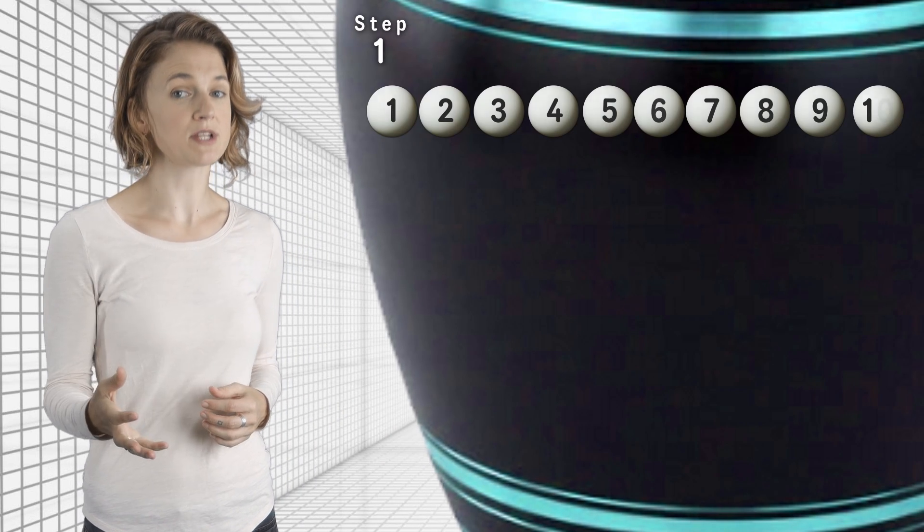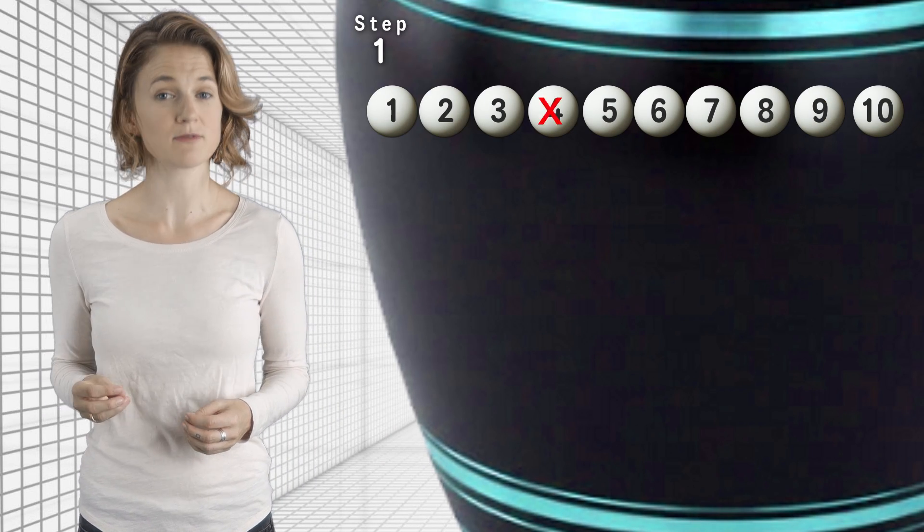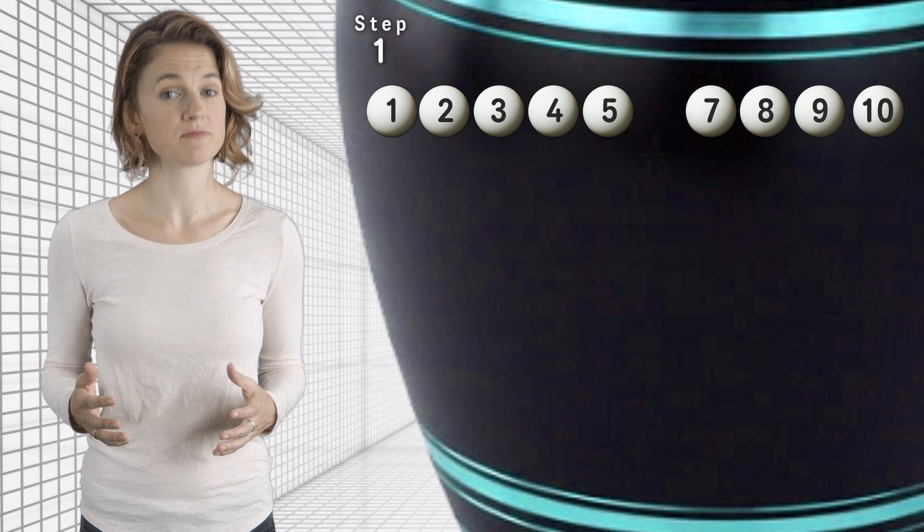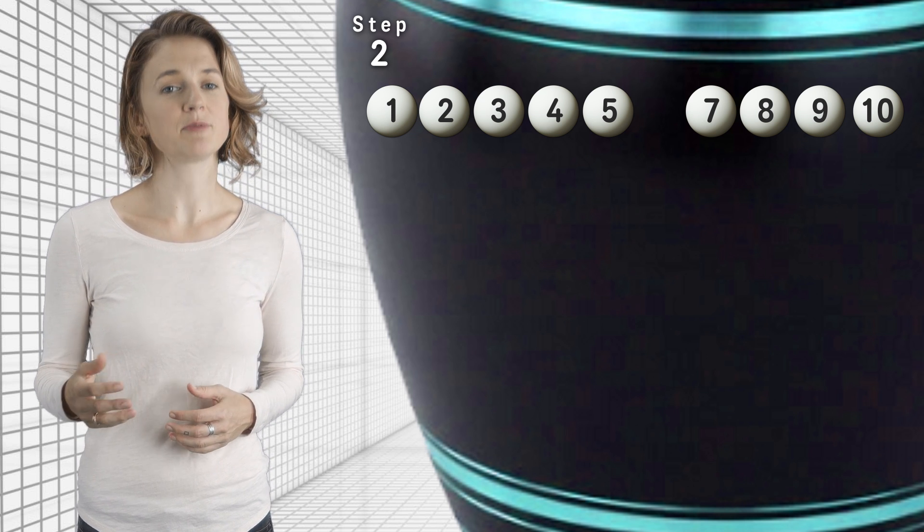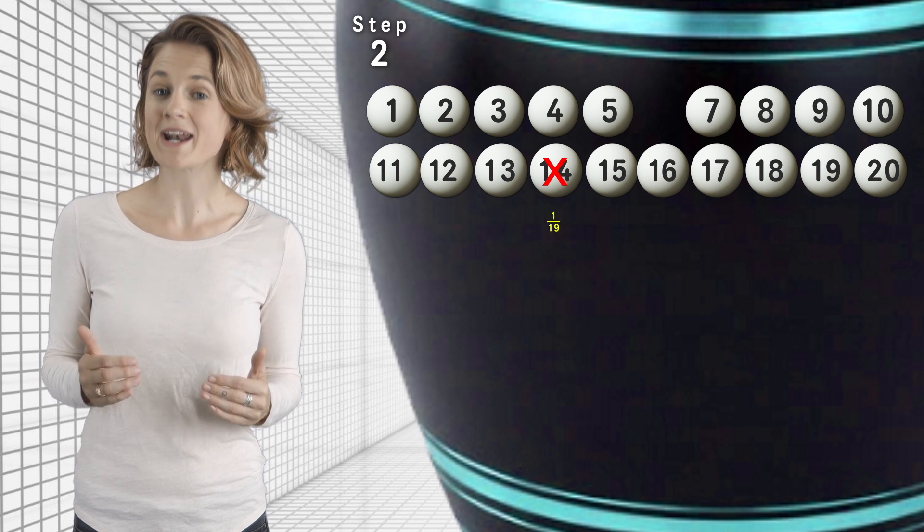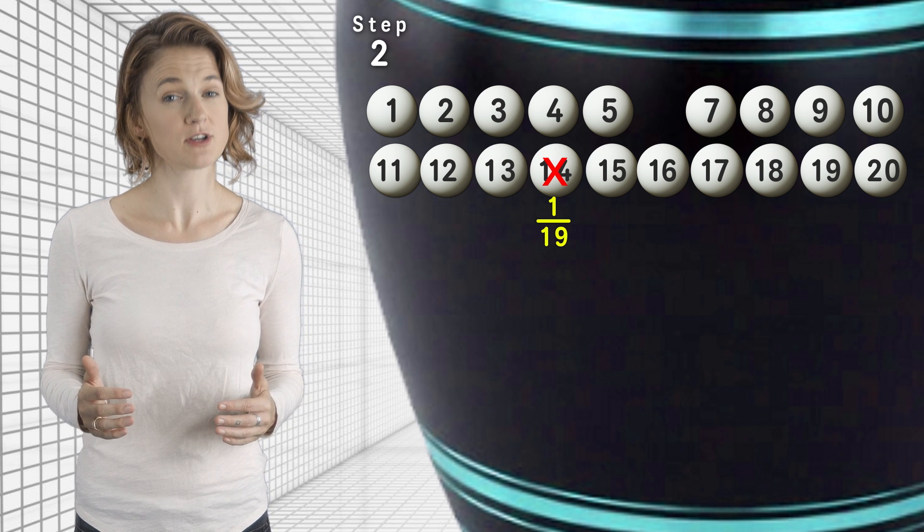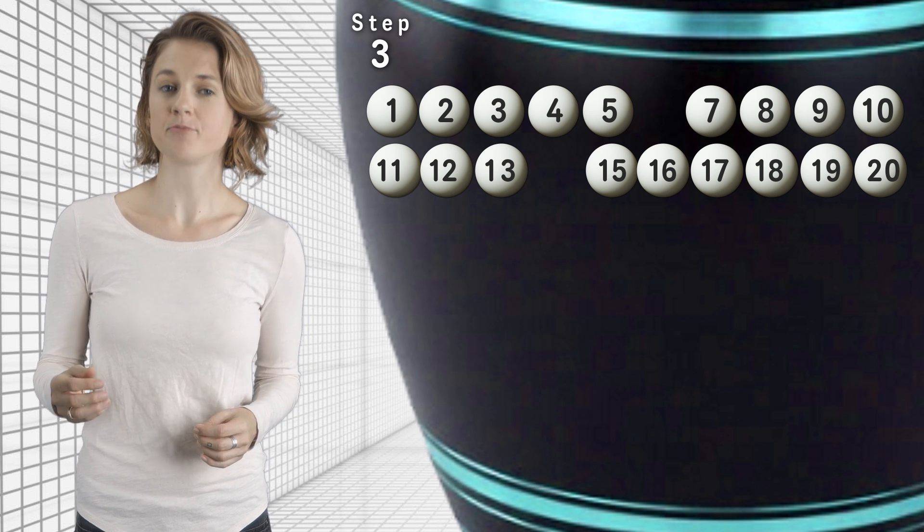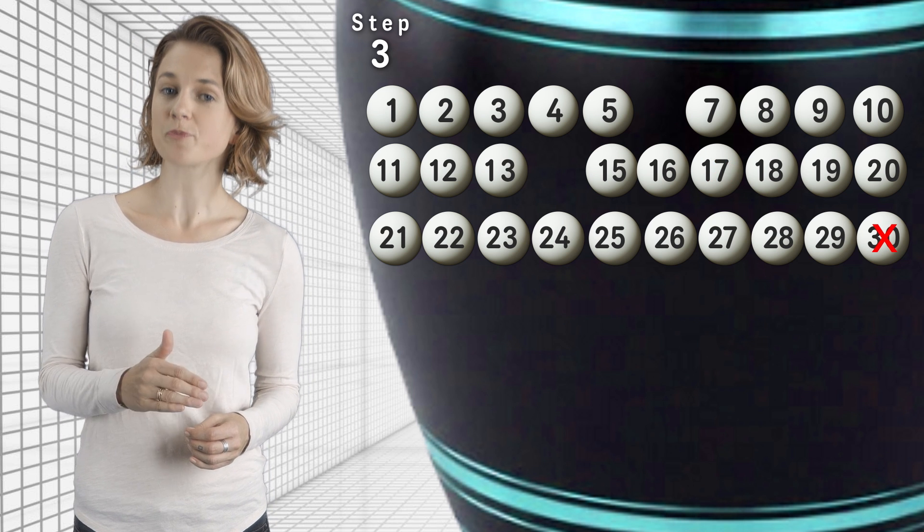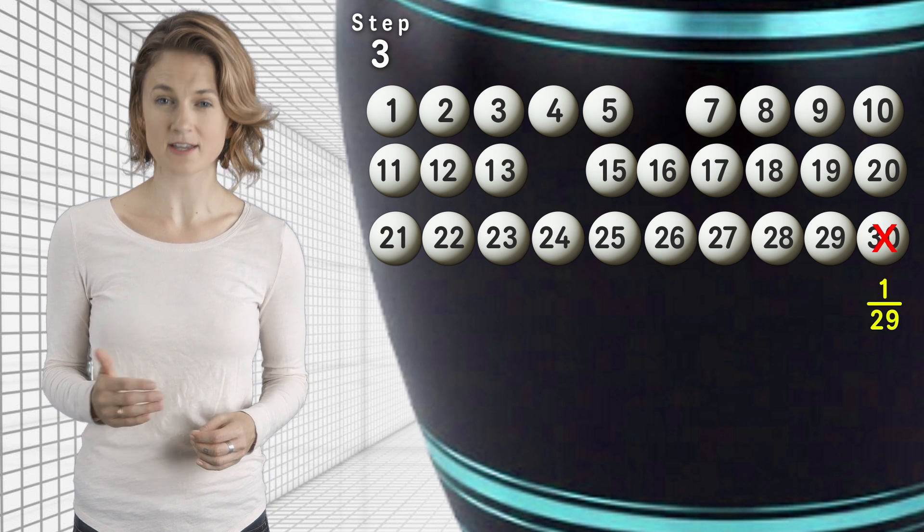On step one, you add balls 1 through 10 and remove a ball uniformly at random. Each ball has a 1/10th chance of being removed. On step two, you add balls 11 through 20 and remove a ball uniformly at random. Now, each ball has a 1/19th chance of being removed. On step three, you add balls 21 through 30 and remove a ball uniformly at random. So each ball has a 1/29th chance of being removed.